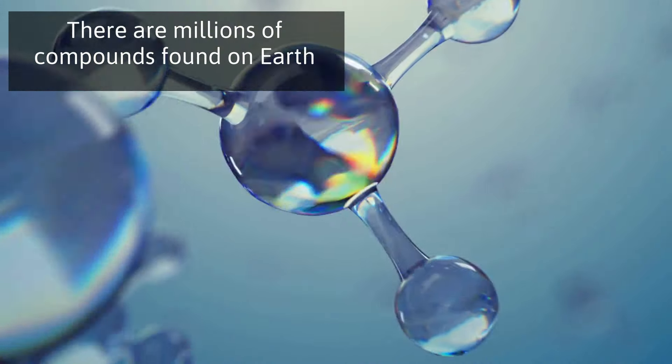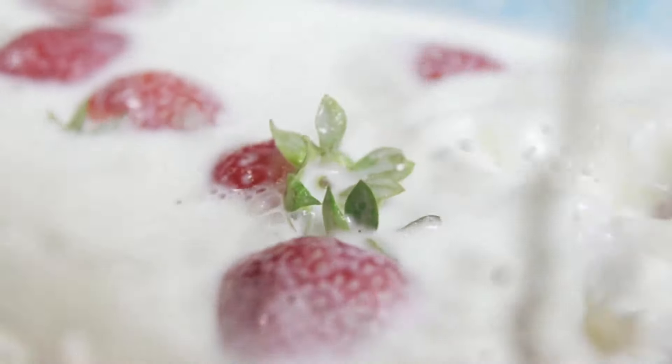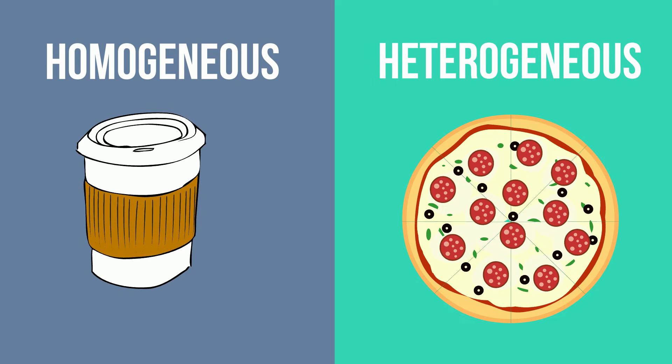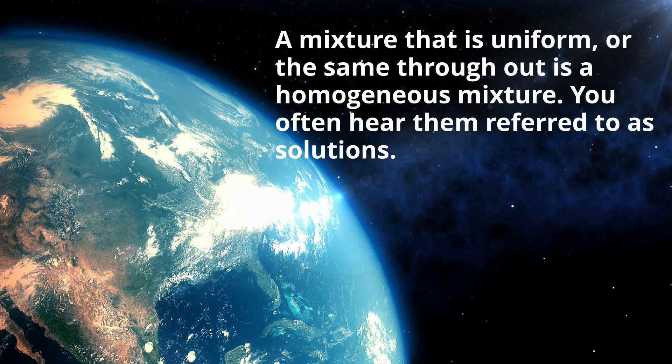Mixtures, on the other hand, are a combination of substances that can be separated physically. There are two types of mixtures: homogeneous mixtures and heterogeneous mixtures. A mixture that is uniform, or the same throughout, is a homogeneous mixture. You often hear them referred to as solutions.